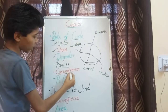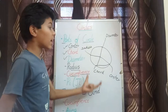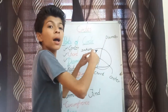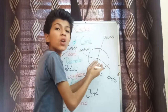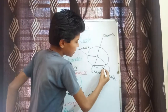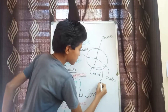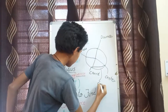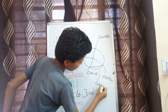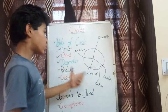Let's move to the circumference. What is the circumference? The circumference is the boundary or the perimeter of the circle. This outer line is called the circumference.